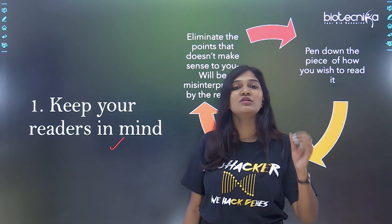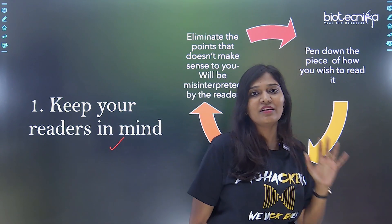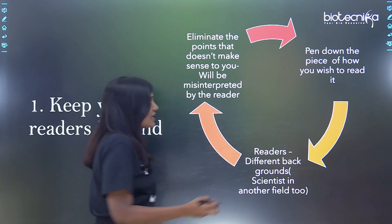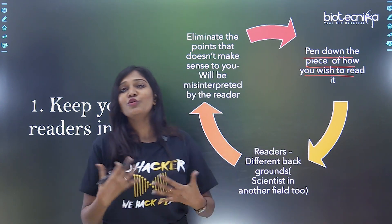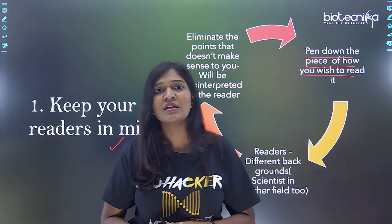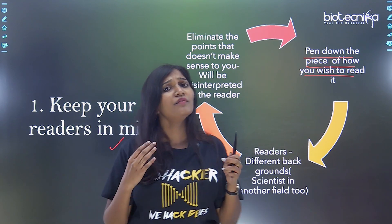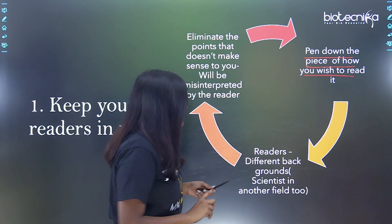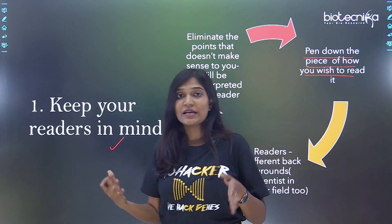The article has to be very easy for the reader to understand clearly. Keep your readers in mind when you start any kind of writing — whether it's a research paper or an article — always think from the reader's perspective. Pen down the piece of information and ask: how do you wish to read it? Imagine that you are the reader. Will you be able to understand what you are going to write? Readers can be from a scientific or non-scientific background.